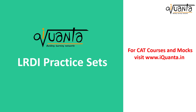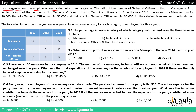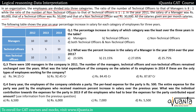In this video we'll be solving a DI set based upon percentages and calculation. In an organization, employees are divided into three categories. The ratio of technical to managers is 8:1, while the ratio of non-technical officers to technical officers is 1:2. In 2011, the salary of a manager was Rs 80,000, a technical officer Rs 50,000, and a non-technical officer Rs 30,000. All salaries given are per month.